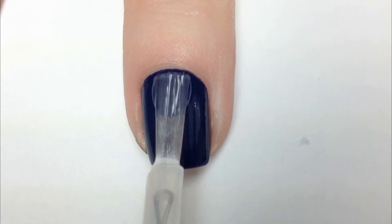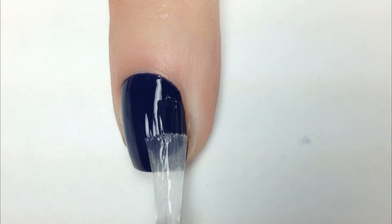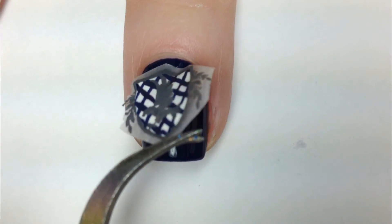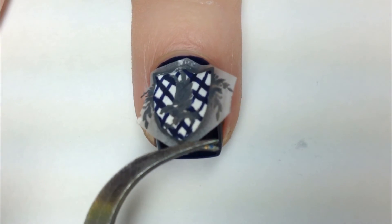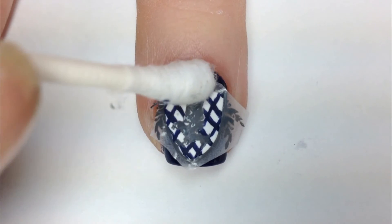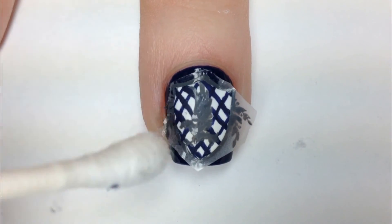I applied a thin layer of the clear polish and carefully applied the decal to the nail. I use a dry q-tip to push the decal against the nail to try and remove any air bubbles and to seal the edges down.